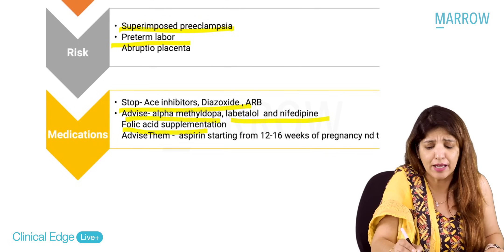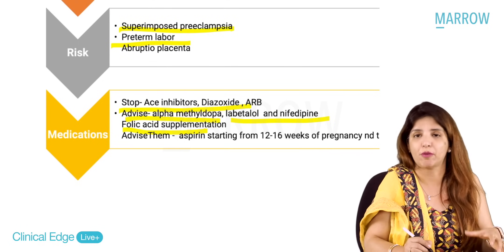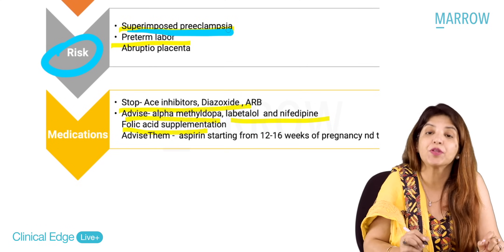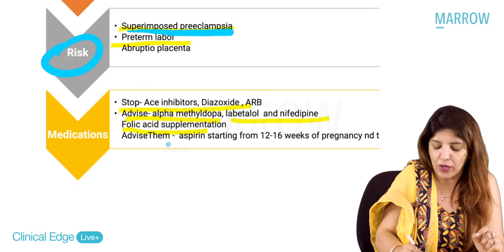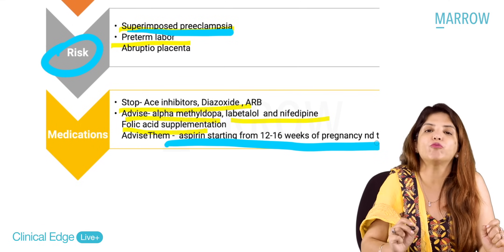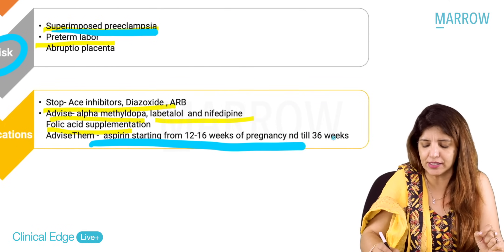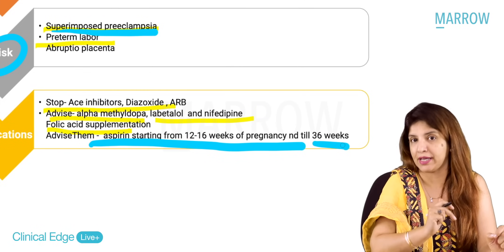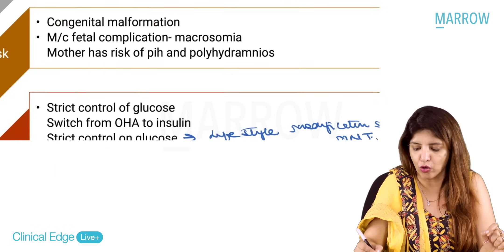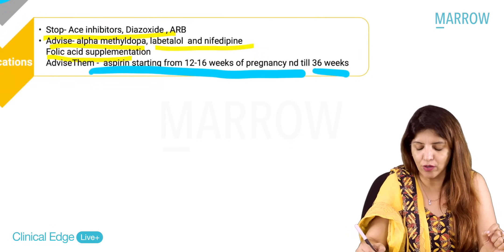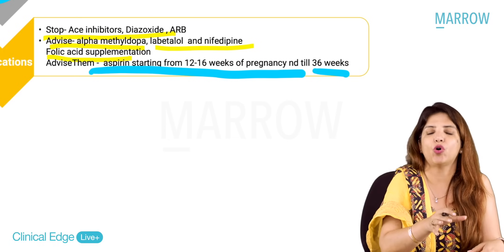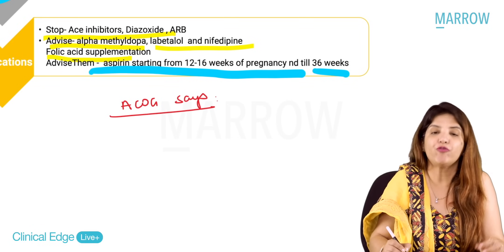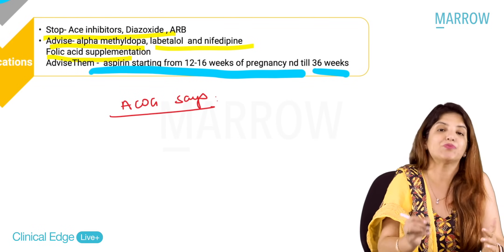In addition to antihypertensive substitution and folic acid supplementation, remember that chronic hypertensive patients carry a risk of superimposed preeclampsia. Therefore, low-dose aspirin should be advised from 12 to 16 weeks of pregnancy and continued until 36 weeks, to prevent superimposed preeclampsia.